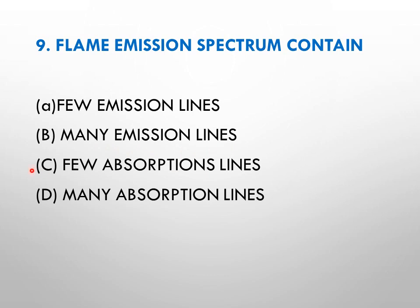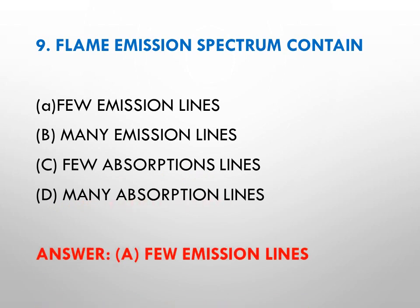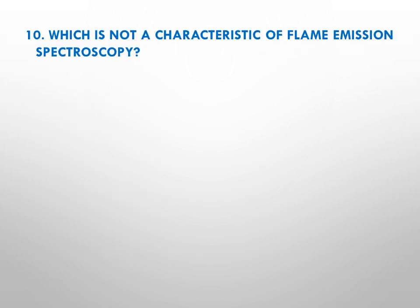Question number nine: flame emission spectrum contains — options: A few emission lines, B many emission lines, C few absorption lines, while D is many absorption lines. The right answer is A, that is few emission lines. Flame emission spectra are a very simple type of spectra having a few emission lines.